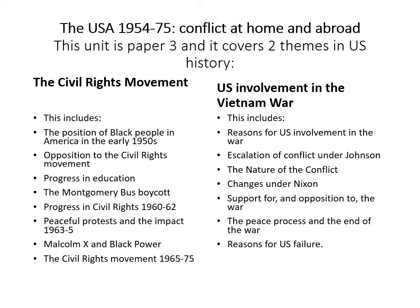For the USA 1954–75 Conflict at Home and Abroad topic, there are two elements. It covers the Civil Rights Movement and US involvement in the Vietnam War. The Civil Rights element involves the position of Black people in America in the early 1950s, opposition to the Civil Rights Movement, progress in education, the Montgomery bus boycotts, progress in Civil Rights 1960–62, peaceful protest and their impact 1963–65, Malcolm X and Black Power, and the Civil Rights Movement from 1965–75.